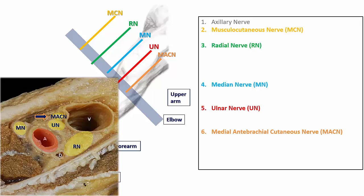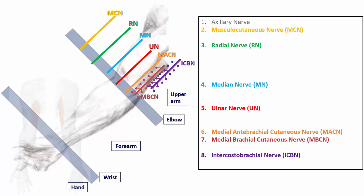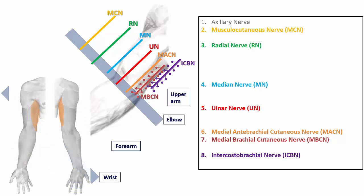There are two other nerves in the upper arm: the medial brachial cutaneous nerve, which is the seventh terminal nerve of the brachial plexus, and the intercostobrachial nerve, which is an anterior cutaneous branch of the T2 spinal nerve. Both of these nerves innervate the skin over the medial aspect of the upper arm down to the elbow.